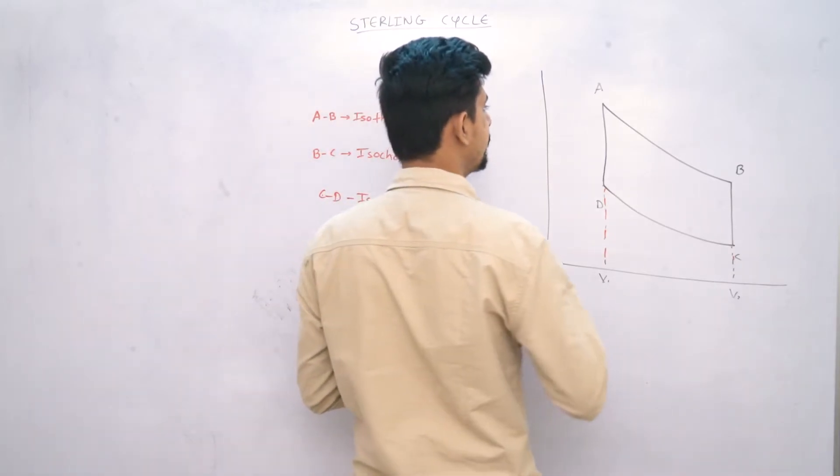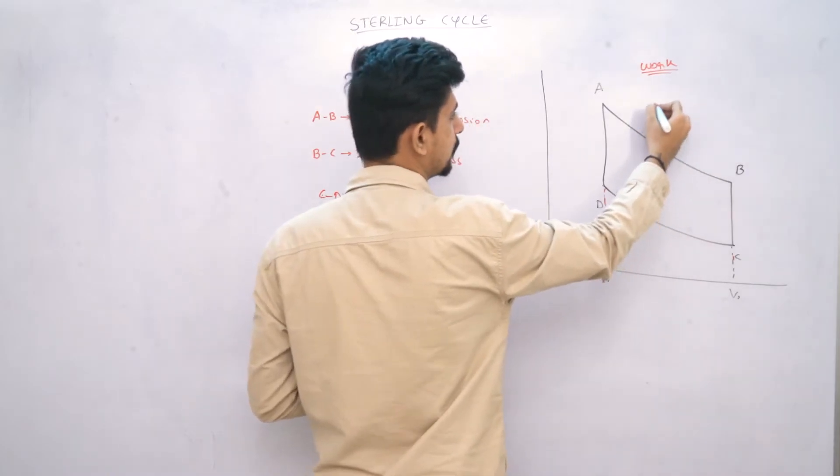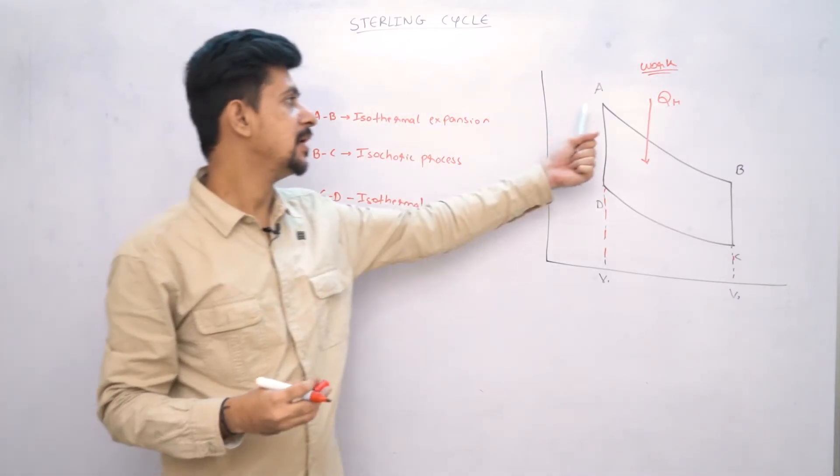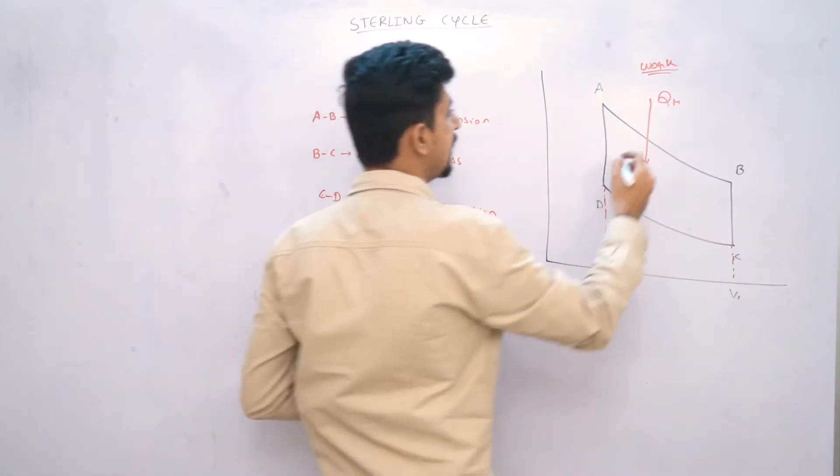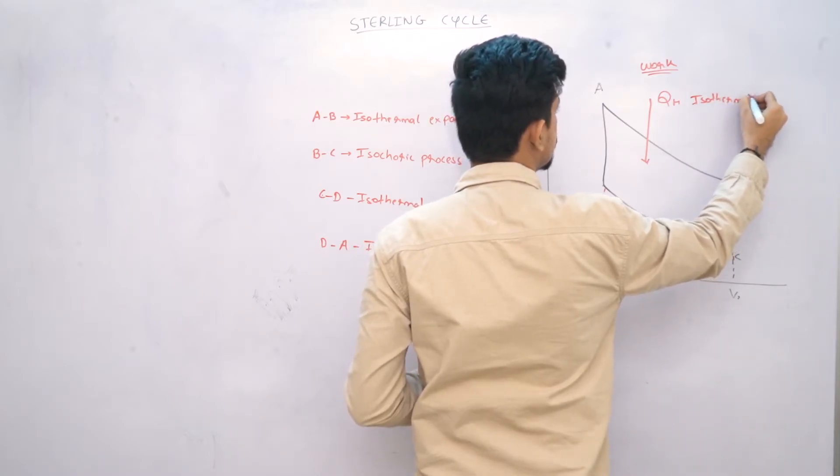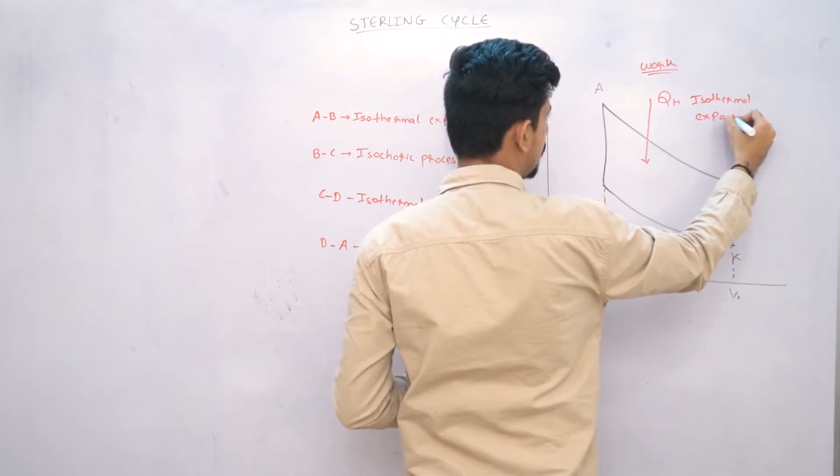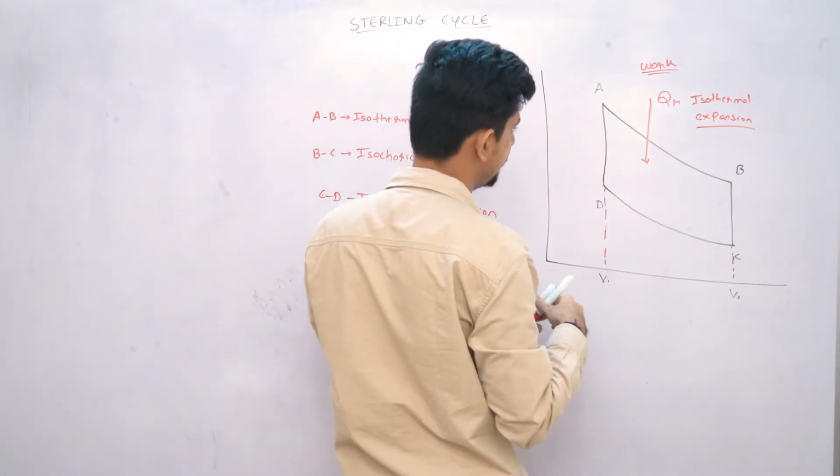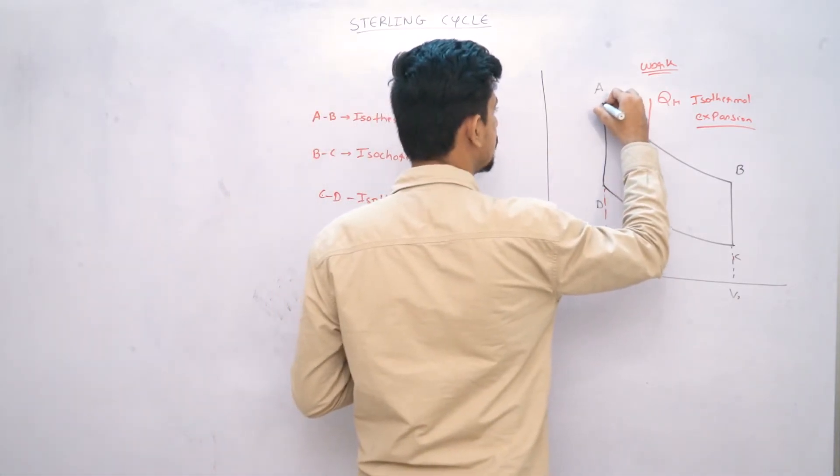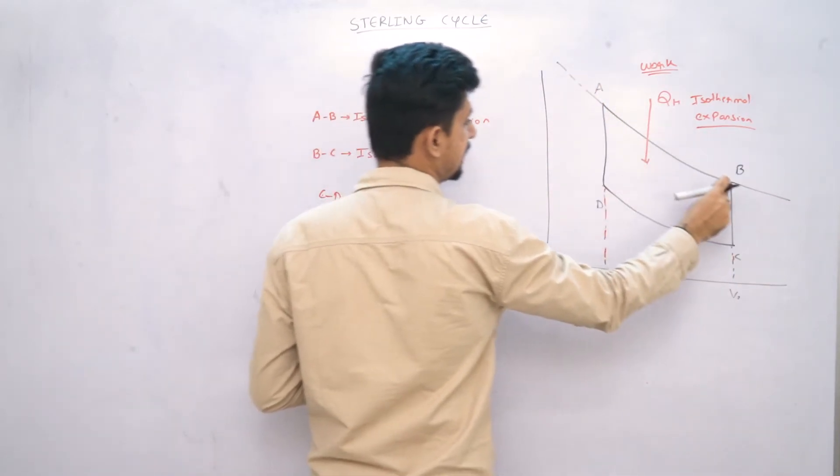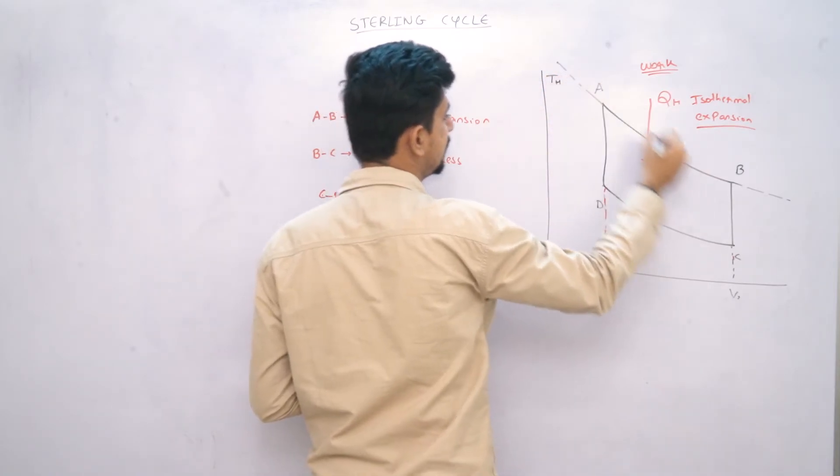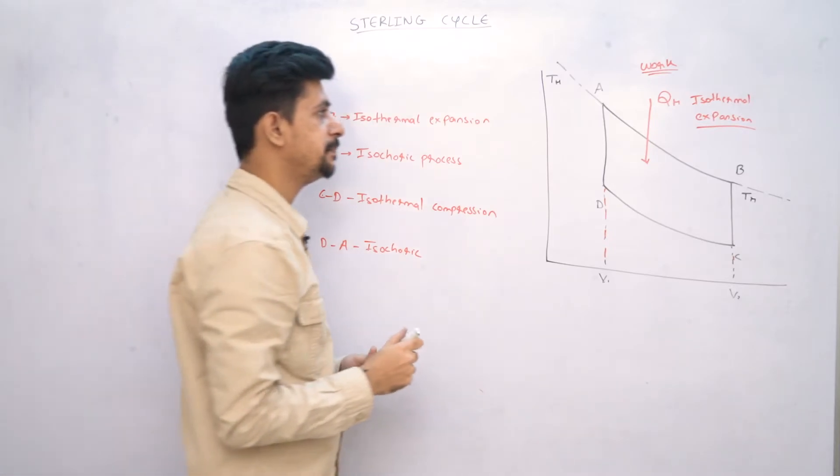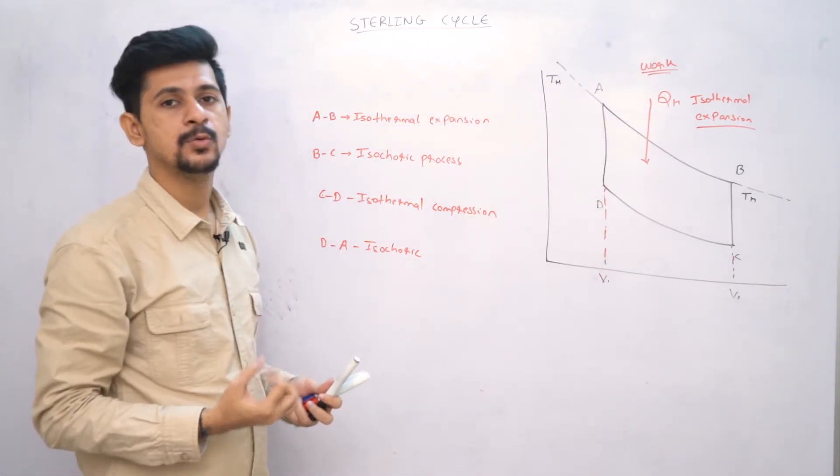So let's start with A. Here we take heat from the hot reservoir. At this point, the temperature will be Th. We will do work done. Since this is an isothermal process, isothermal expansion to be more accurate, because the volume is increasing. If the volume is increasing, work is being done. The temperature will remain Th. From A to B, work will be done. This will be an isothermal expansion and the temperature will remain the same. We take heat from H and convert it to work.